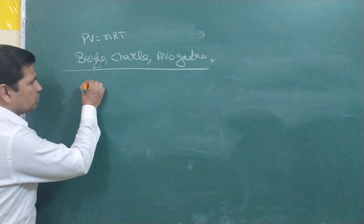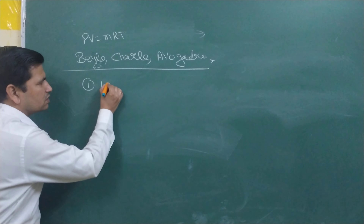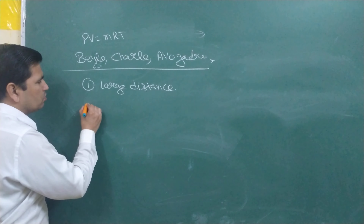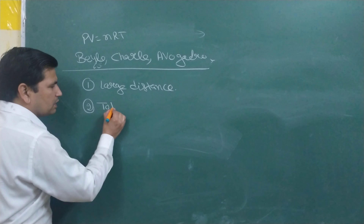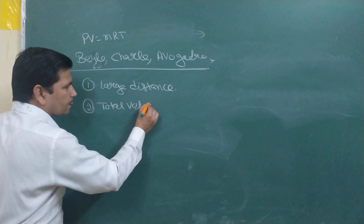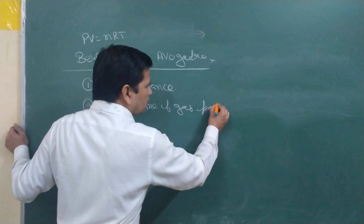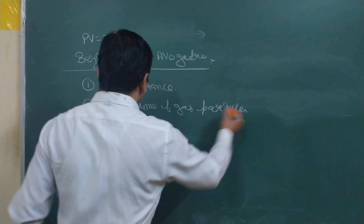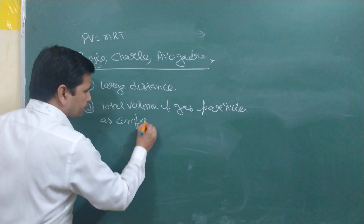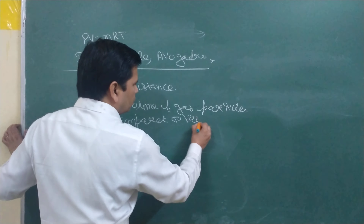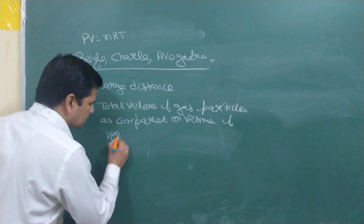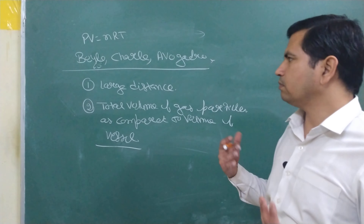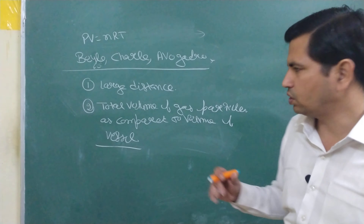What did they assume? They assumed that there is a very large distance between the particles of gas. Second thing they supposed: the total volume of gas particles is very, very small — negligible — as compared to the volume of the vessel. After understanding these two assumptions, you will understand why PV = nRT is not followed at every temperature, and why it is followed at high temperature and low pressure.